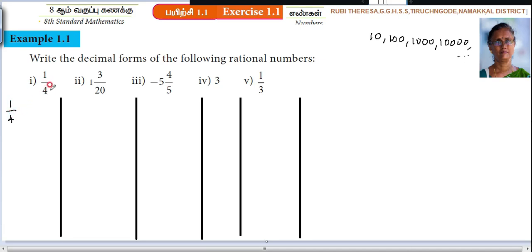So, 4 can be converted into 100. You can't convert this into 10. You can convert this 4 into 100. So, multiply it by 25. 4 times 25 is 100. When we are multiplying the denominator by 25, the numerator also should be multiplied by 25. So, 1 times 25 is 25. 4 times 25 is 100.